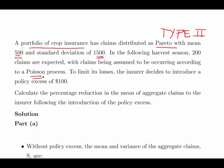So we have a combination of the Pareto distribution and a Poisson process, so this is a compound Poisson process. To limit its losses the insurer decides to introduce a policy excess of $100. Calculate the percentage reduction in the mean aggregate claims to the insurer following the introduction of this policy excess.